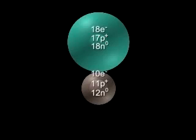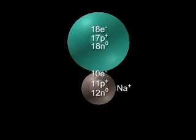The loss of the electron converts the sodium atom into a smaller, positively charged sodium ion, Na+, while the gain of the electron converts the chlorine atom into a larger, negatively charged chloride ion, Cl-.